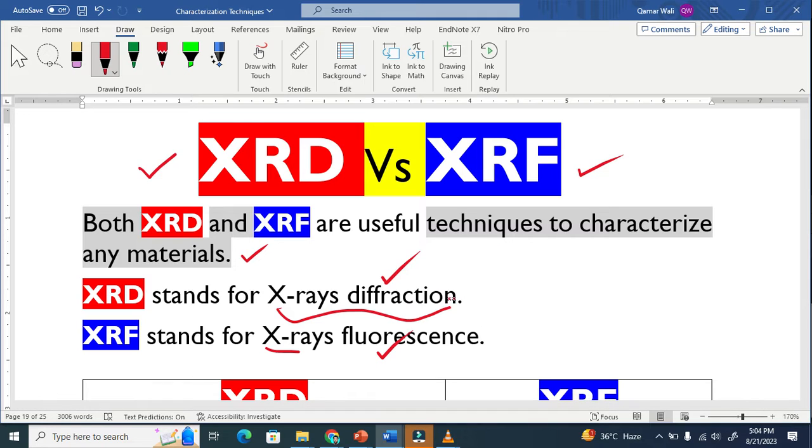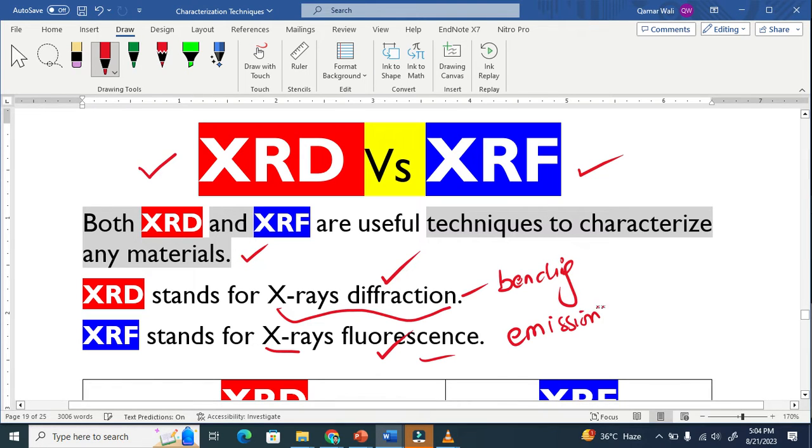Diffraction basically means bending. It works on the basis of bending of X-rays. But fluorescence, when you see this word, basically means emission. Emission of what? Emission of light. In this case, we have X-rays.